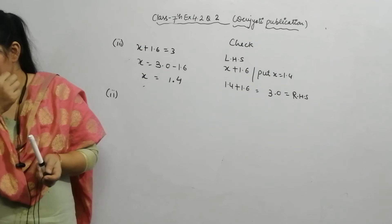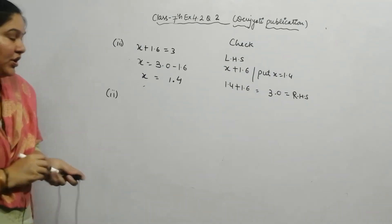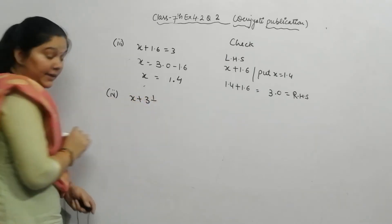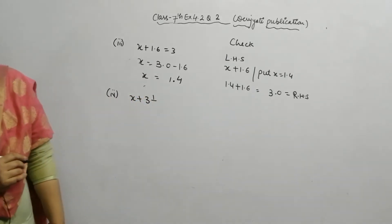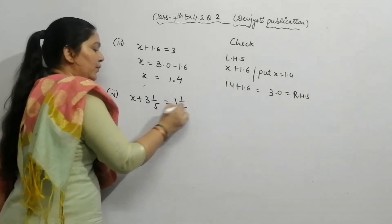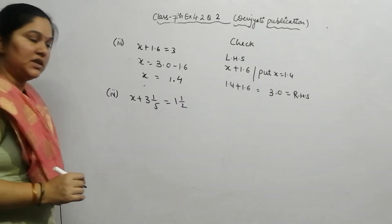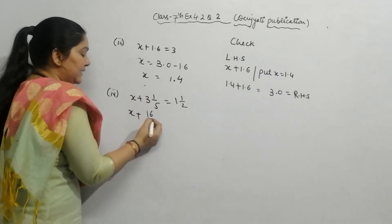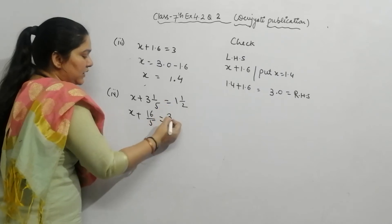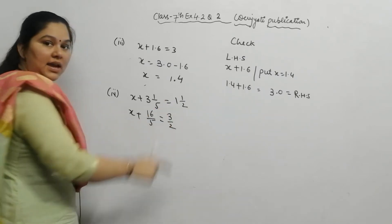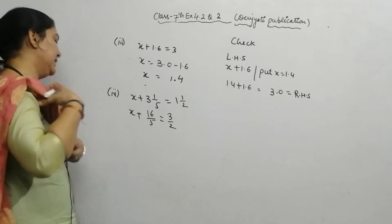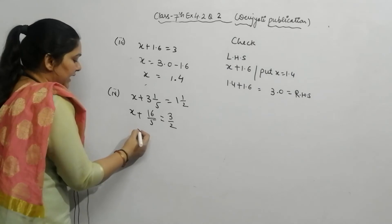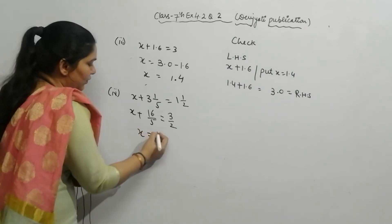Let's start Part 4. Part 4 is: x plus 3 and 1 by 5 is equal to 1 and 1 by 2. First convert mixed fractions to improper fractions: 5 times 3 plus 1 equals 16, so 16 by 5. And 2 times 1 plus 1 equals 3, so 3 by 2. The plus moves to the other side as minus, so x equals 3 by 2 minus 16 by 5.